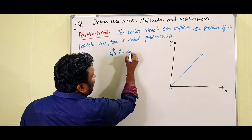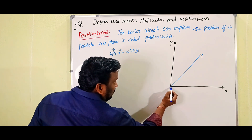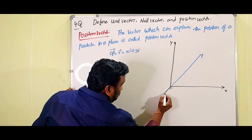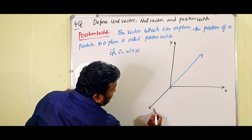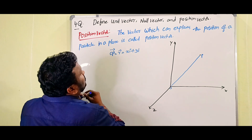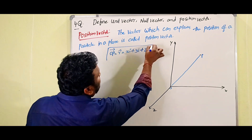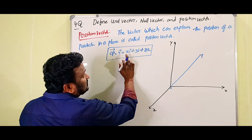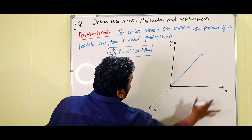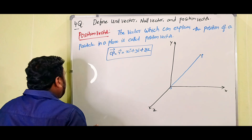In two dimensions, r equals x·i + y·j. If we add a z-axis for three dimensions, then OP equals x·i + y·j + z·k. So this is the position vector. By using this vector, we can easily explain the motion of the particle in the x-y-z plane.